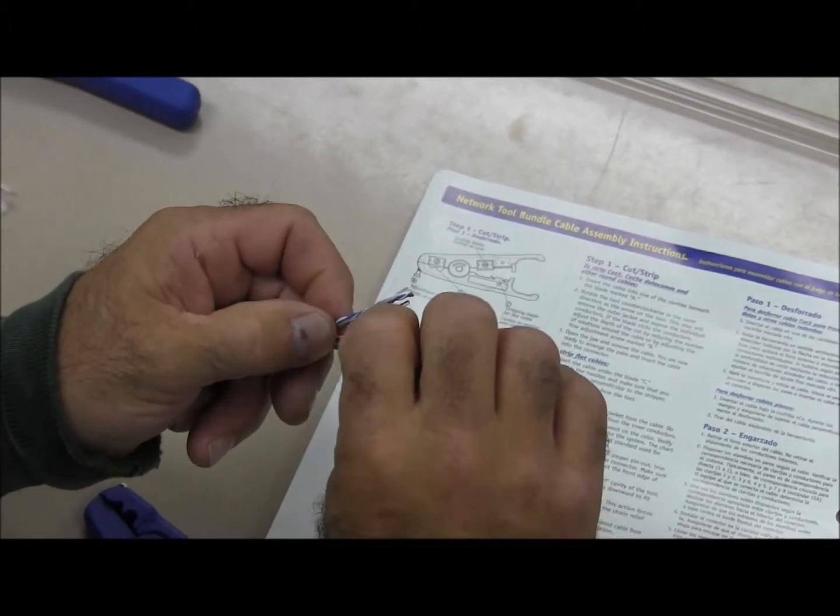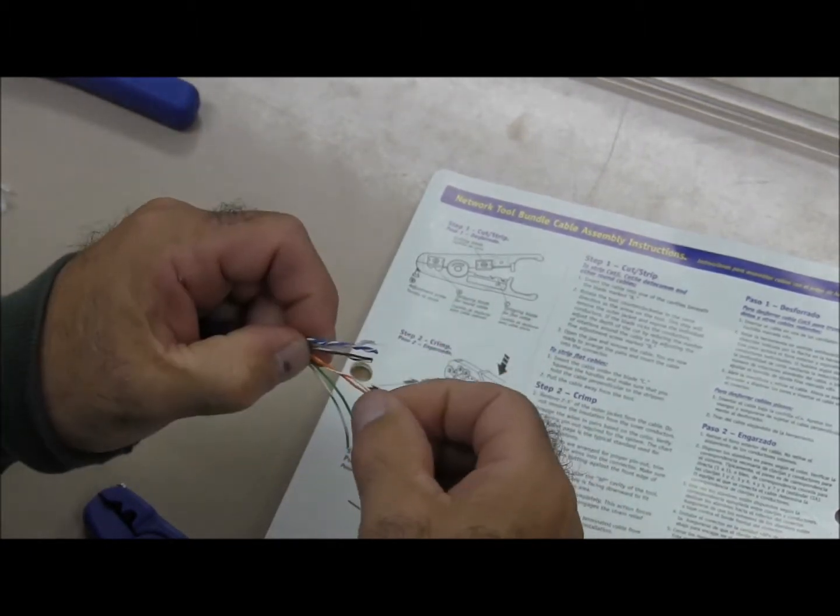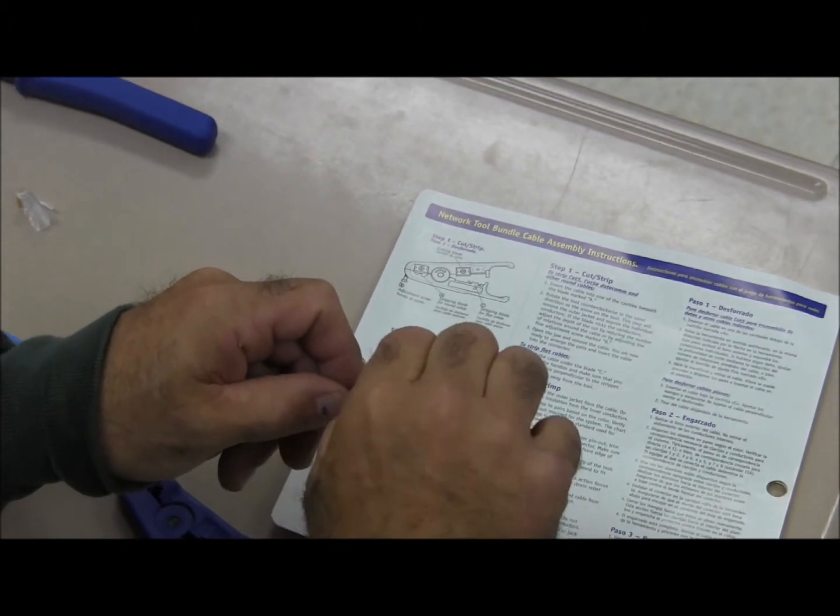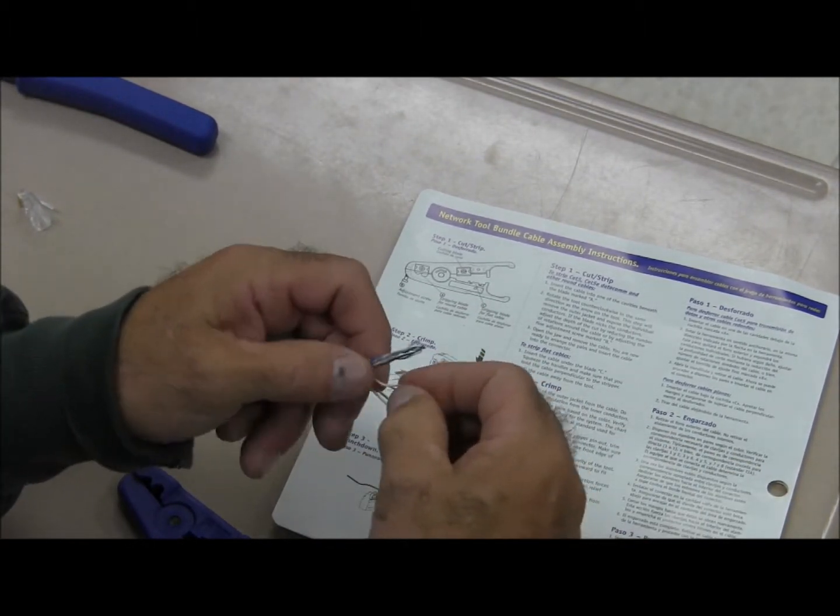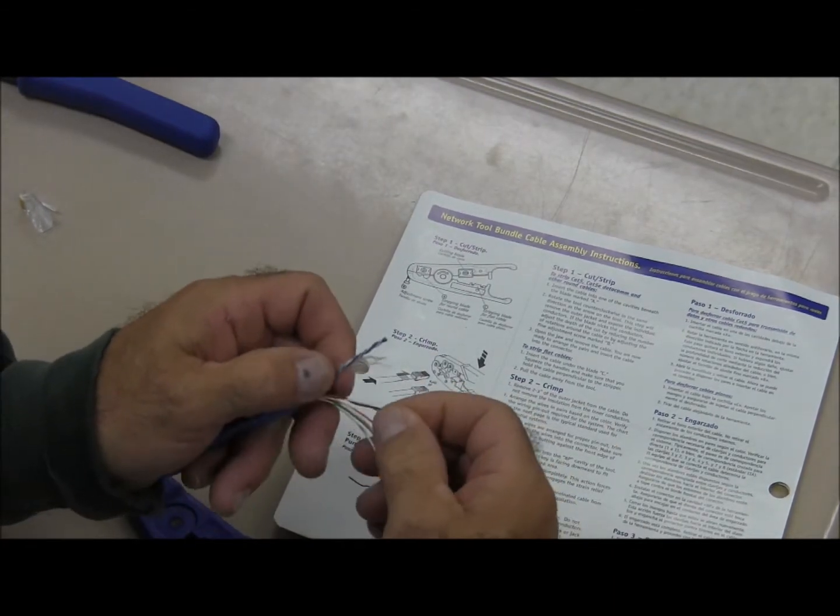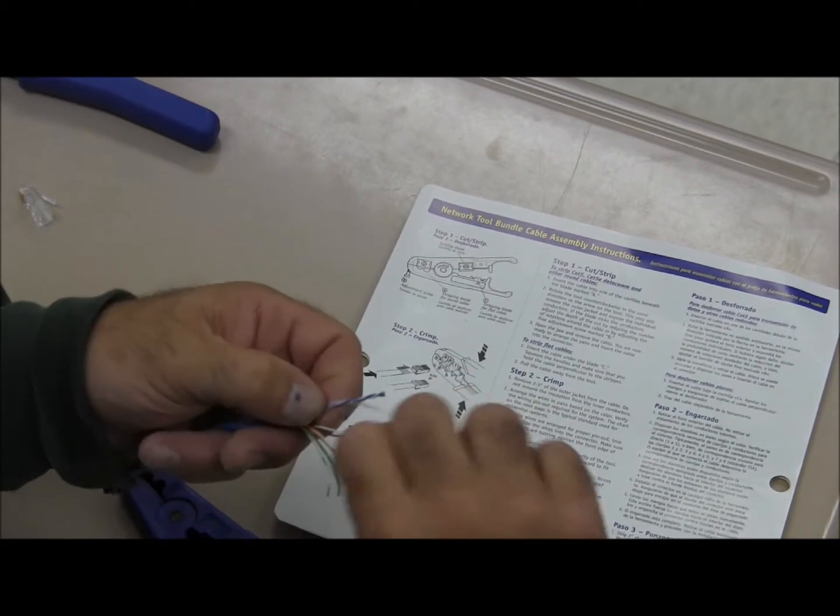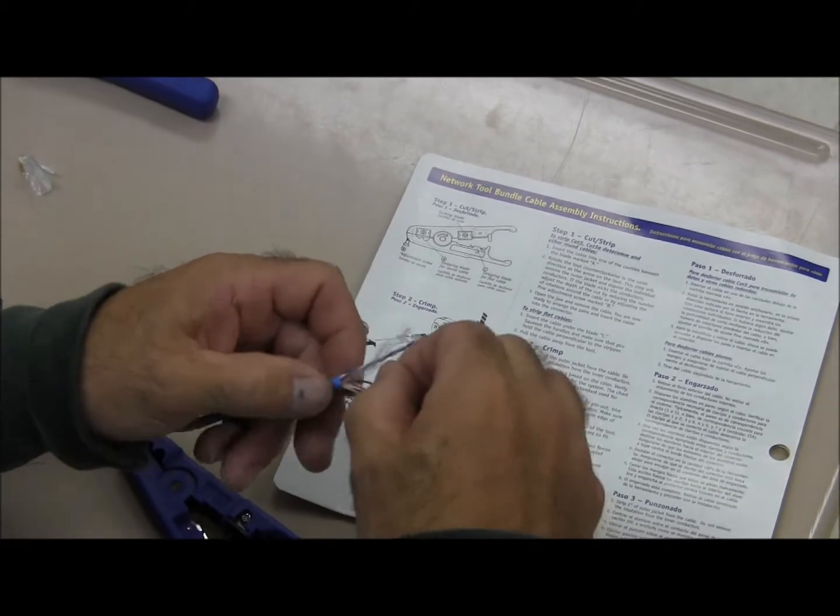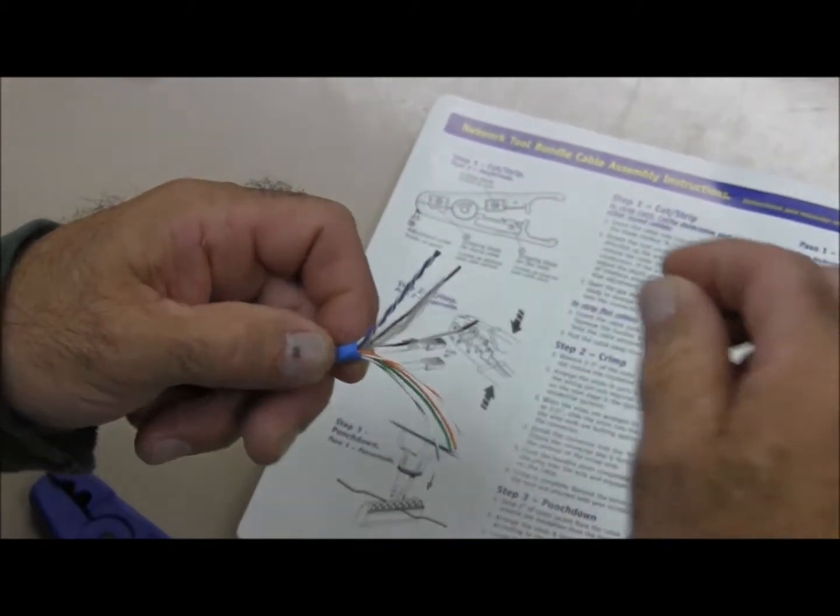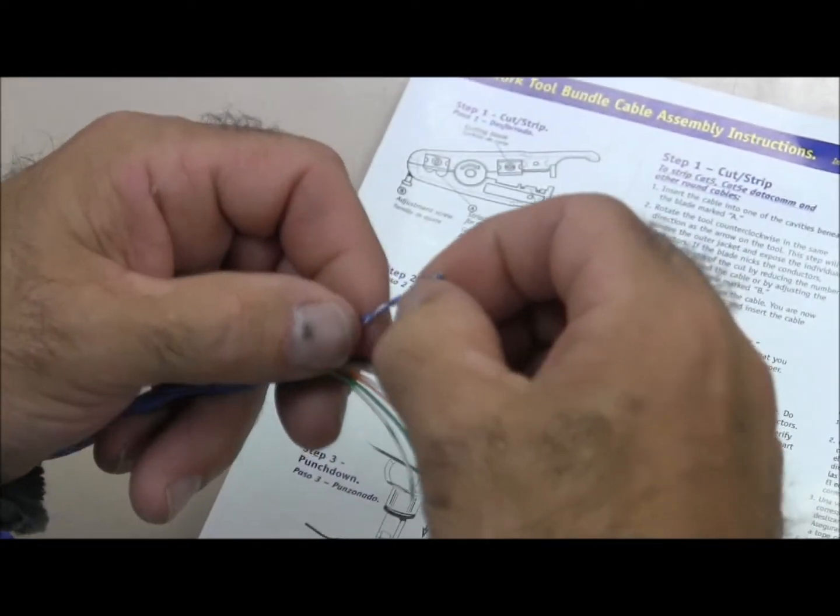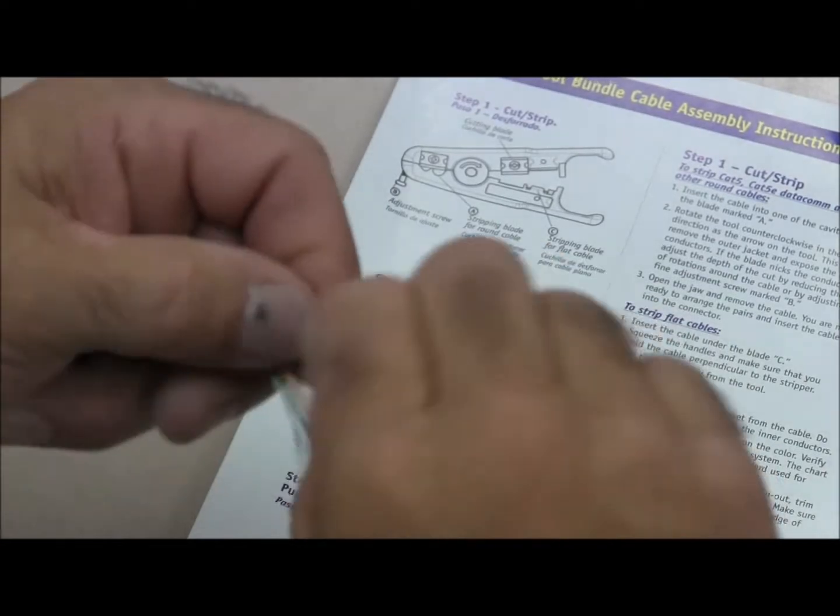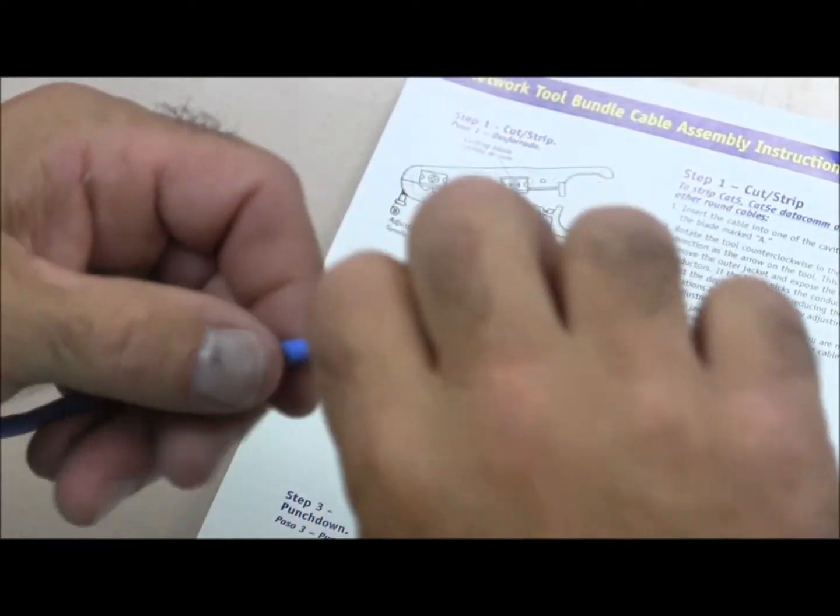The next thing we can do is continue on the orange wires. Straighten the wires all the way through. As you can see, I'm keeping them together and I'm rotating and getting all of the stranding out of it.